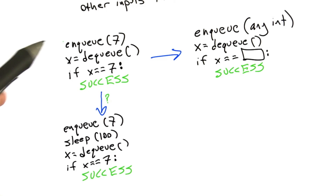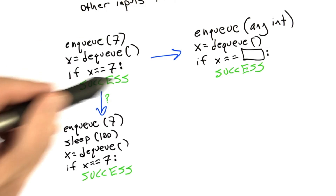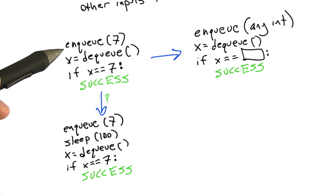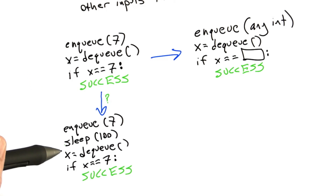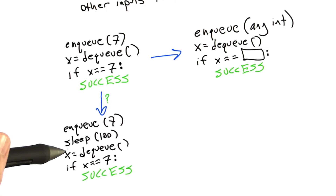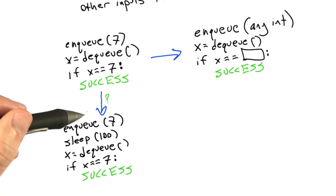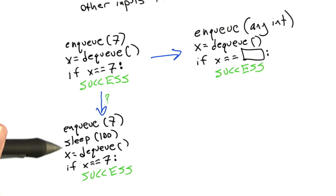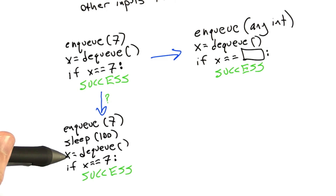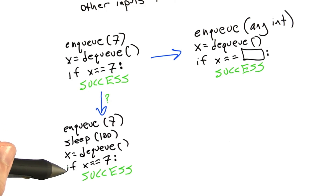The question being asked here is, given this test case that we've already talked about, is it possible to conclude without trying it that this test case will succeed? What this test case does is it queues 7, sleeps for a while, dequeues an element, and then checks if it was 7.